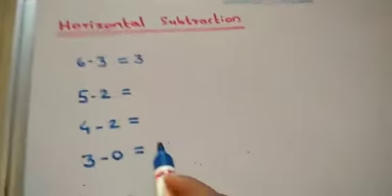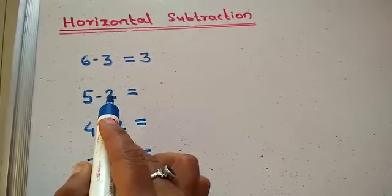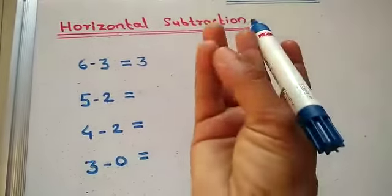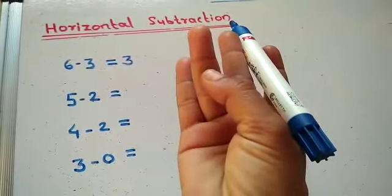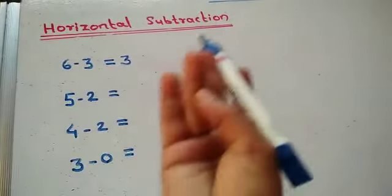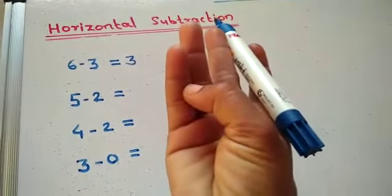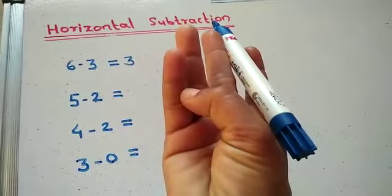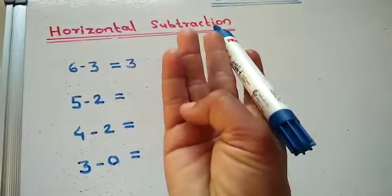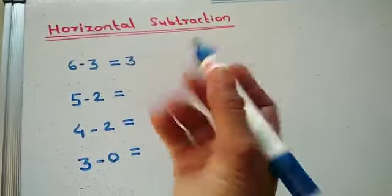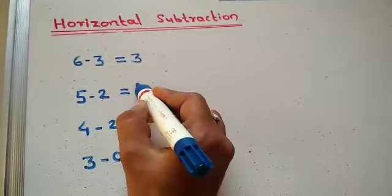Next example: 5 minus 2. Count the number 5: 1, 2, 3, 4, 5. Minus 2 — remove 2 sections: 1, 2. How many sections are left? 1, 2, 3 — 3 sections. So 5 minus 2 is equal to 3.